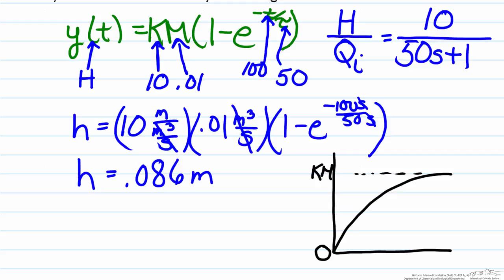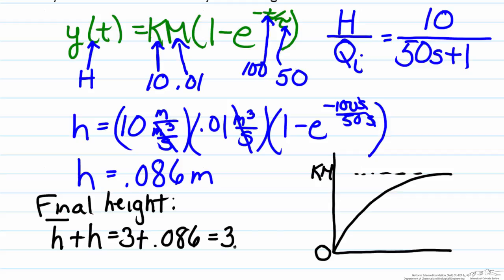So what that means is that the final height is really h bar plus the h we found, which is going to equal 3.086 meters. So again an important point to note here is the relationship that is provided here is basically in deviation variables.